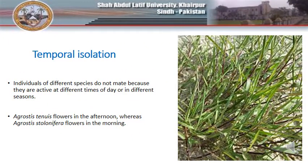In temporal isolation, species may reproduce at different times of the year or flower at different times of the day. A good example is the western pine: one type normally sheds its pollen in February, while another does not shed its pollen until April. Agrostis species is another example, where some species flower in the morning while others flower in the afternoon. Temporal simply means time — it is a barrier that exists because of the timing of reproduction in flowers.